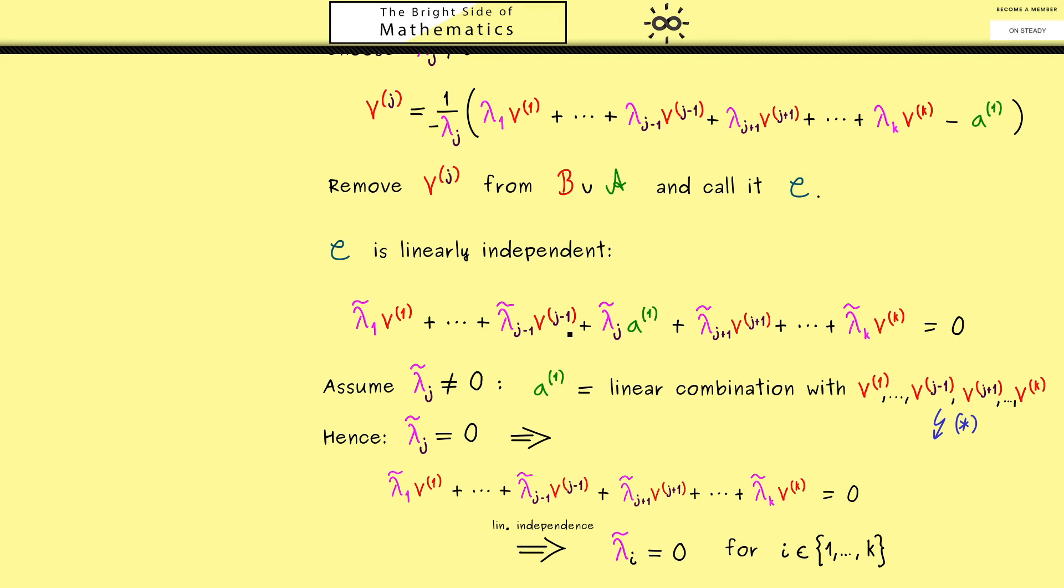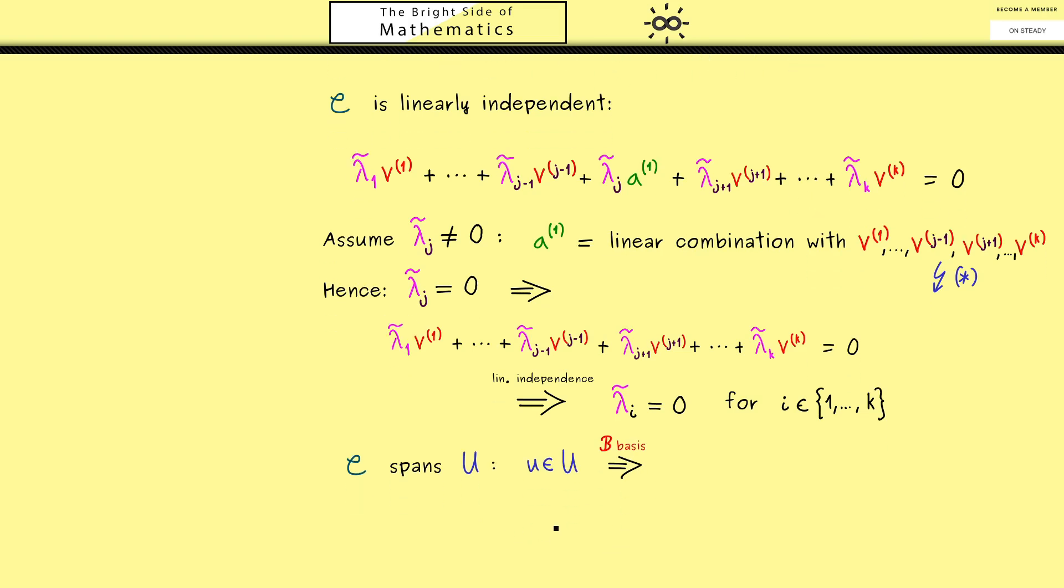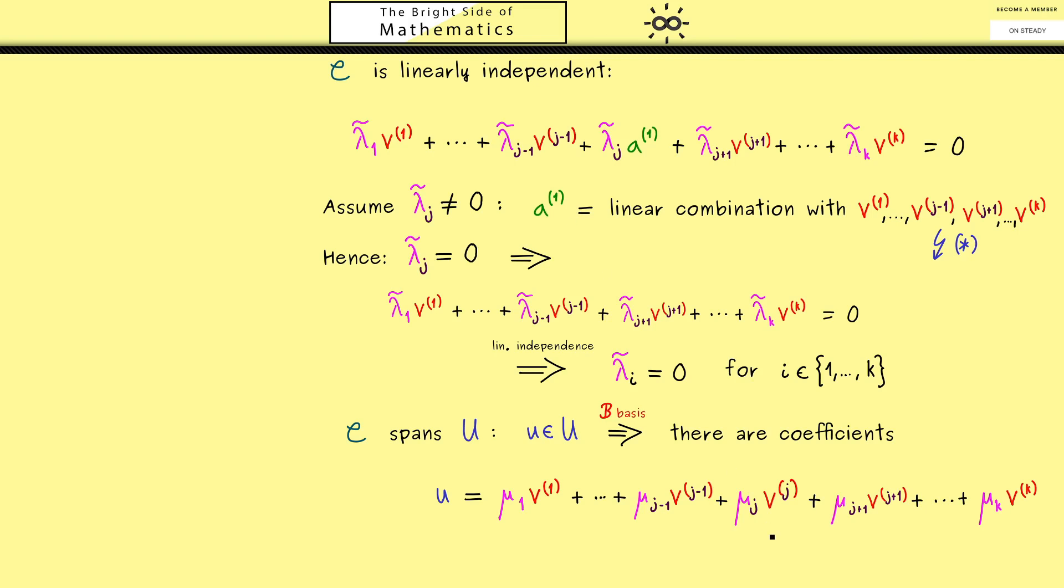Therefore, the last thing to show here is that C also spans the whole subspace U. And in order to show this, I would say let's choose an arbitrary vector u in our subspace. And there we can use that B is a basis, which means it spans the vector space U. So there are coefficients which I now call mu_1 to mu_k. And there you see, the only thing we have to change here is now that we have to get rid of v^(j) in the middle. So you know, instead of our v^(j), we now want our a^(1) here.